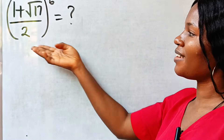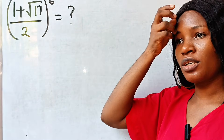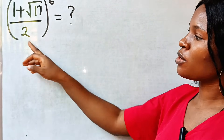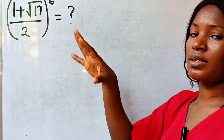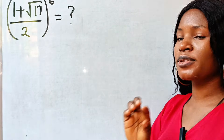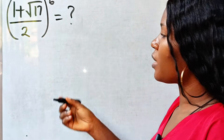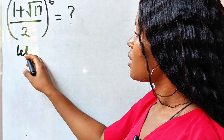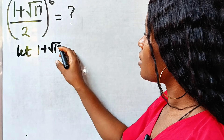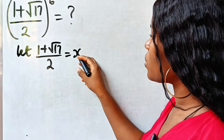Let's find or simplify this. Welcome back to my channel. First of all, we are going to call whatever we have inside this bracket x. Just follow me step by step — this is how you solve this type of question; it's always easy. So we can say: let 1 plus √17 divided by 2 be equal to x.